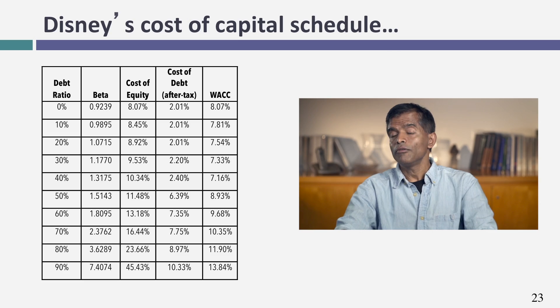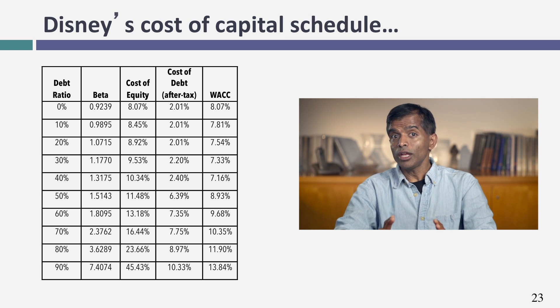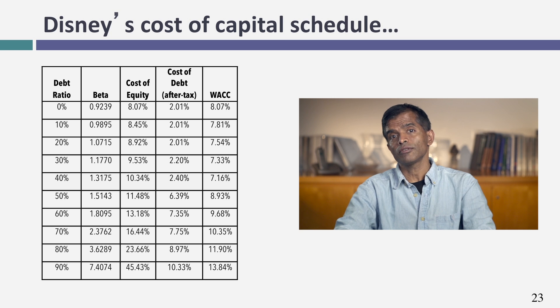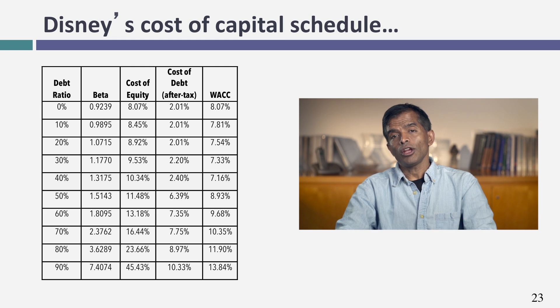I now have a cost of equity from the levered beta and a cost of debt based on the rating and tax rate. I bring them together in a table that looks like the hypothetical company's table we started with. The lowest cost of capital for Disney, just as for the hypothetical company, occurs at a 40% debt ratio. Don't take that as a rule of thumb — the optimal isn't always 40% — but at 40%, Disney's cost of capital is 7.16%, which is 0.65% lower than its existing cost of capital.